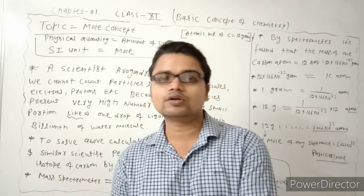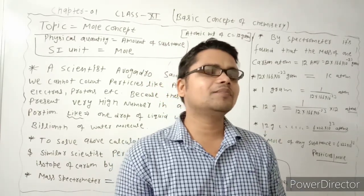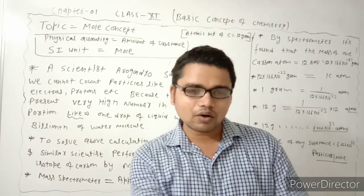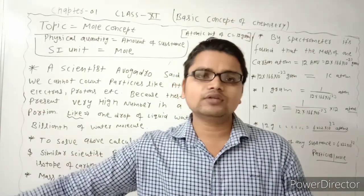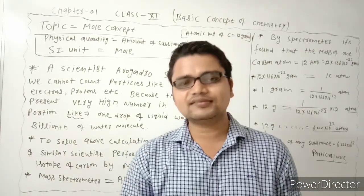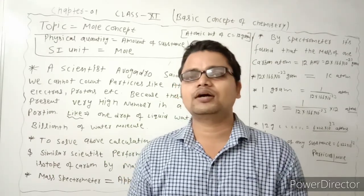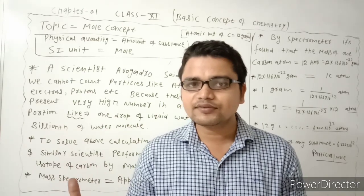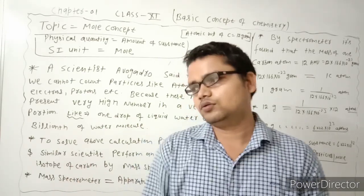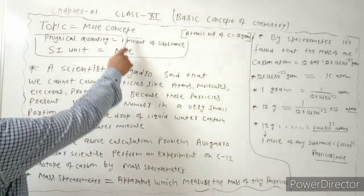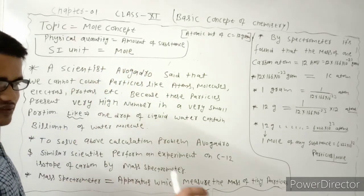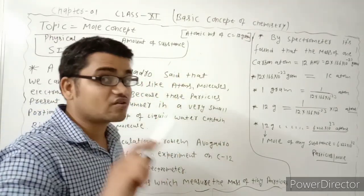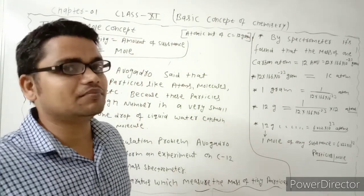Amount can also be represented by the number of particles. This is where we start — when we represent the amount of a substance from the number of particles. The physical quantity is the amount of substance, and the unit is the mole. The amount of substance is expressed in respect to the number of particles.